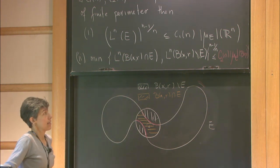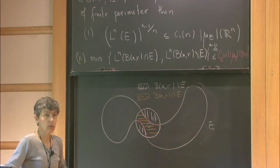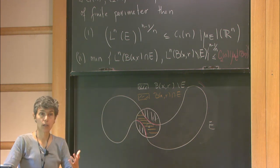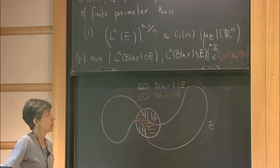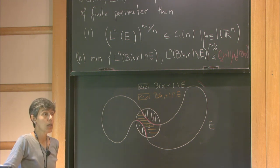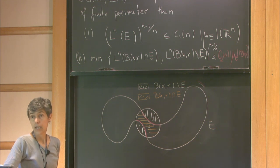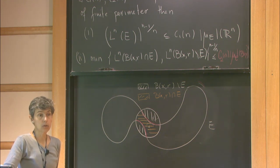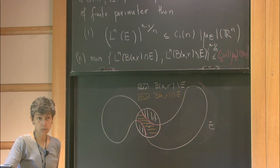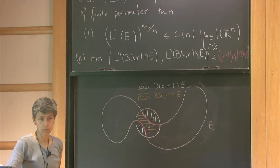What are these constants C1 and C2? If you're a bit more advanced, C1 and C2 are essentially the Sobolev and Poincaré constants. These are proved using Sobolev and Poincaré inequalities for bounded variation functions.